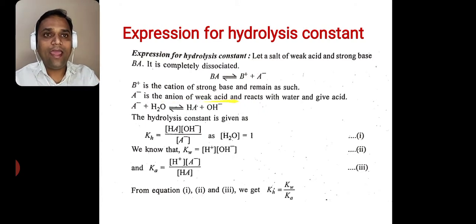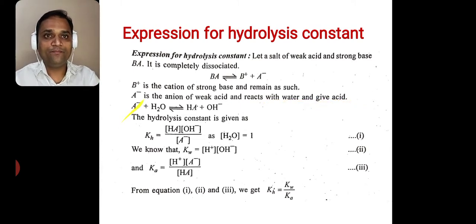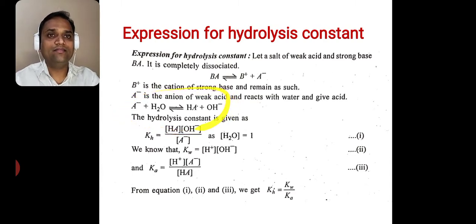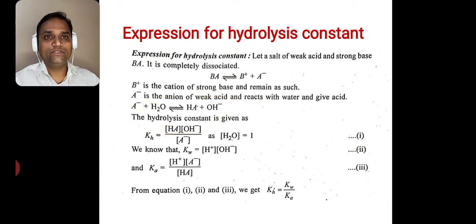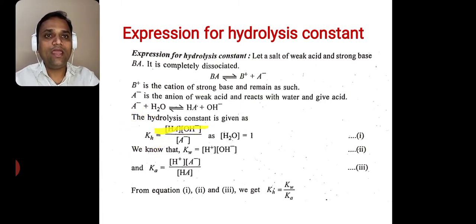A⁻ is the anion of the weak acid and reacts with water to give HA and OH⁻. For this reaction, the hydrolysis constant KH is given as: KH = [HA][OH⁻] / [A⁻]. The molar concentration of water is considered as one because water is present in large quantity.